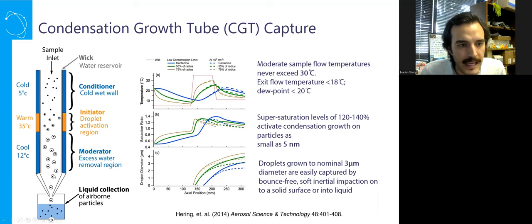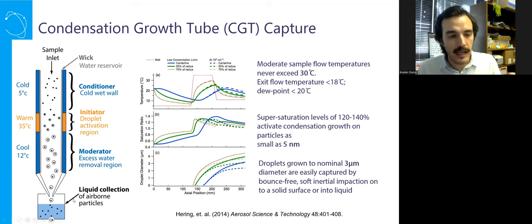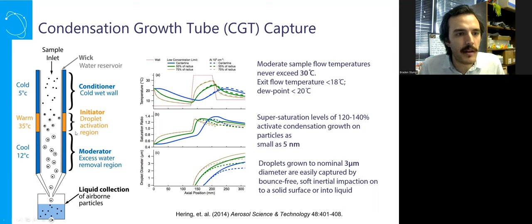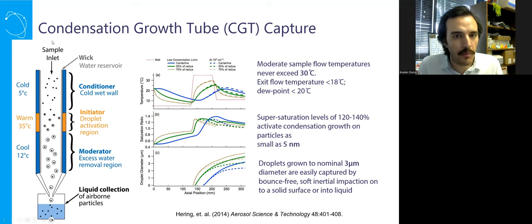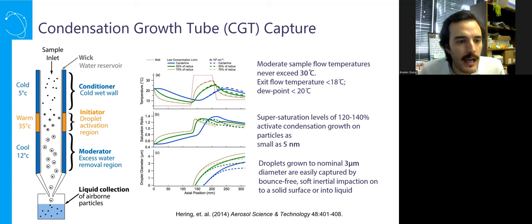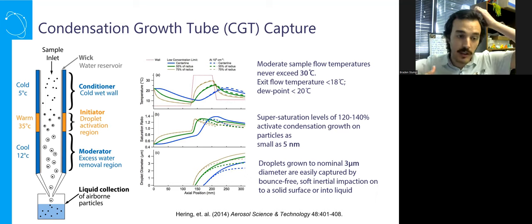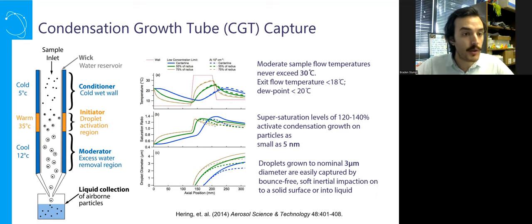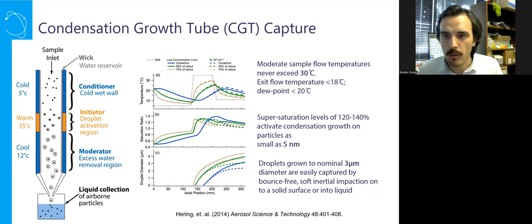Particles as small as five nanometers — in the case of our instrumentation — have condensation forced around them forming a droplet, and that droplet grows throughout the rest of the water condensation growth tube forming a larger, approximately three to four micron droplet. That three to four micron droplet is easier to capture inertially into liquid, onto solid surfaces, onto swabs, onto SEM stubs, TEM grids — the whole shebang. What this is, is a method to grow and surround particles in water via effectively natural processes. One huge benefit is that with this blanket of water around the particles, you get really pretty gentle impaction — that bubble of water is taking a lot of the stress of impaction, so you don't have to impact as aggressively.